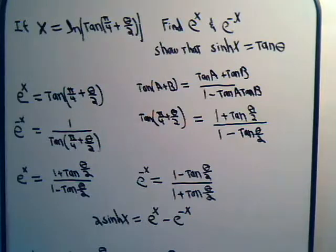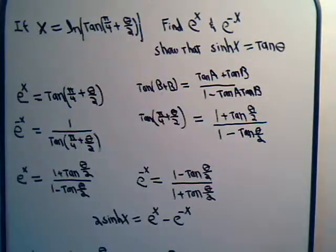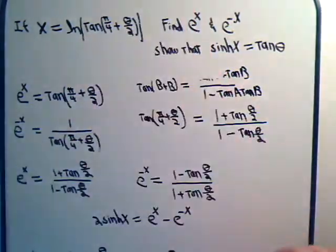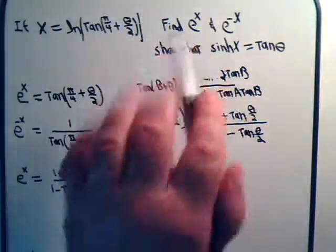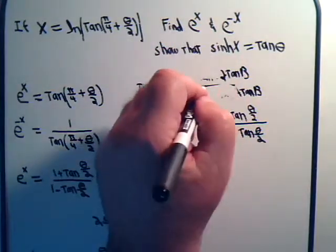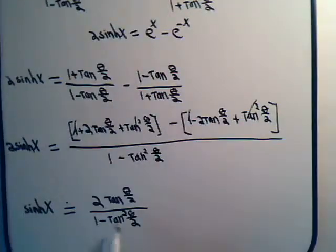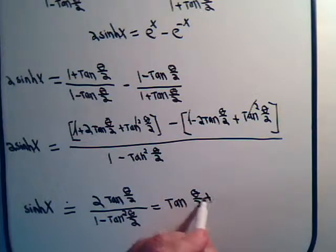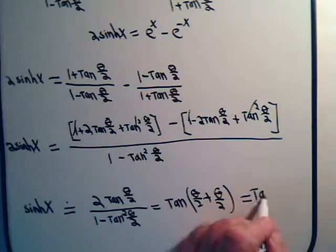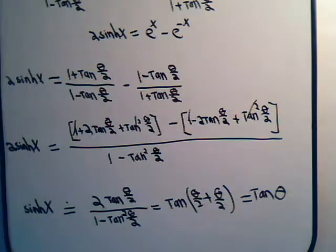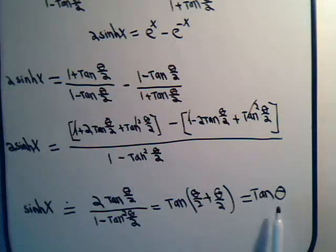Going back to the double angle formula: if we had the tangent of b plus b, that gives 2·tan(b) / (1 - tan²(b)), which is exactly what we have here. So this is equal to the tangent of θ/2 + θ/2, which equals the tangent of theta. Therefore the hyperbolic sine of x equals the tangent of theta, and it worked out.